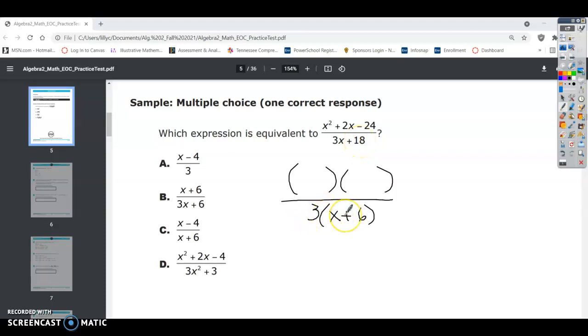So again, factoring is just a process of rewriting something and kind of breaking it down. Alright, so this is a trinomial, so we're going to factor this a little bit different. We're going to factor this into two binomials that when multiplied together equals this expression here.